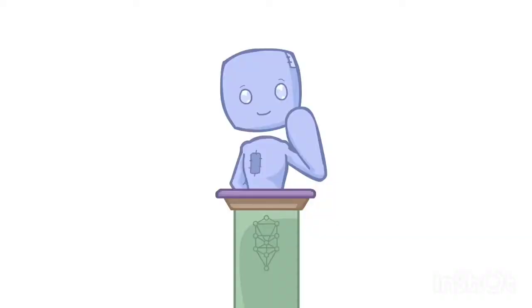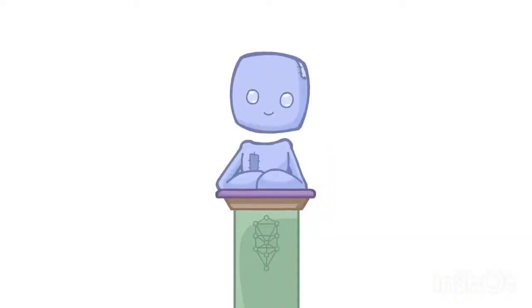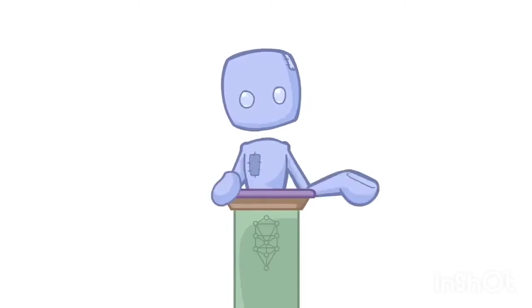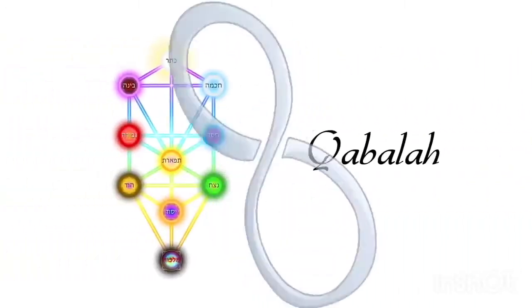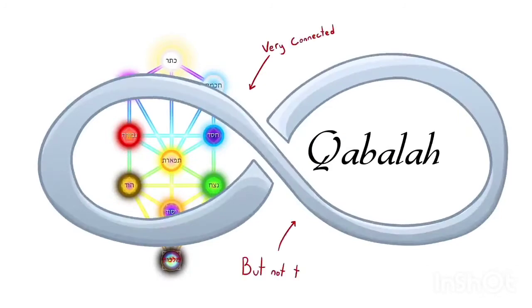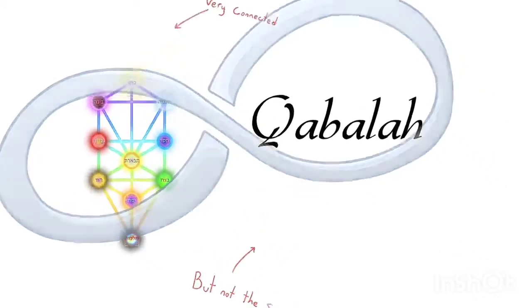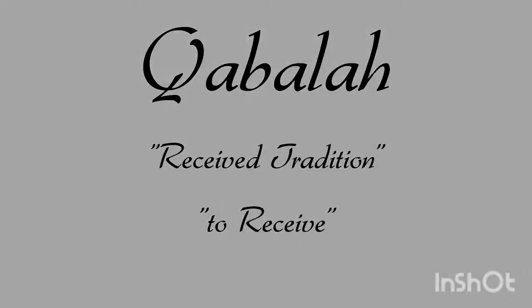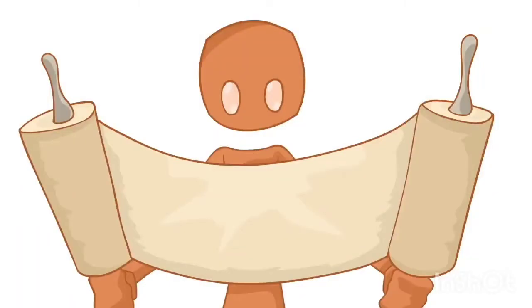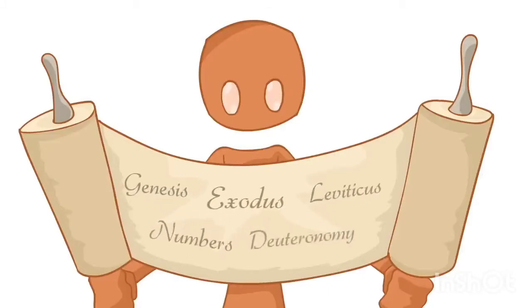This brings us to the central discussion of what we're actually going to be exploring in this episode. So far we've been treating the Tree of Life and Kabbalah as synonymous things, and it's time that we make a distinction here. Kabbalah is actually a word which translates to "received tradition," or simply "to receive," and actually is an ancient esoteric interpretation of the Torah, which is what most of us would know as the first five books of the Old Testament.